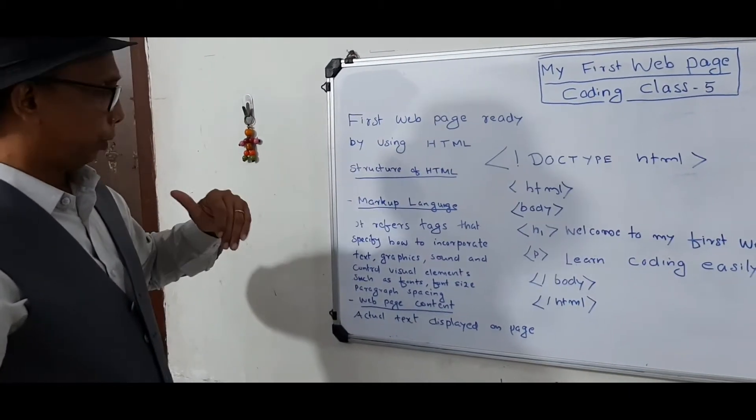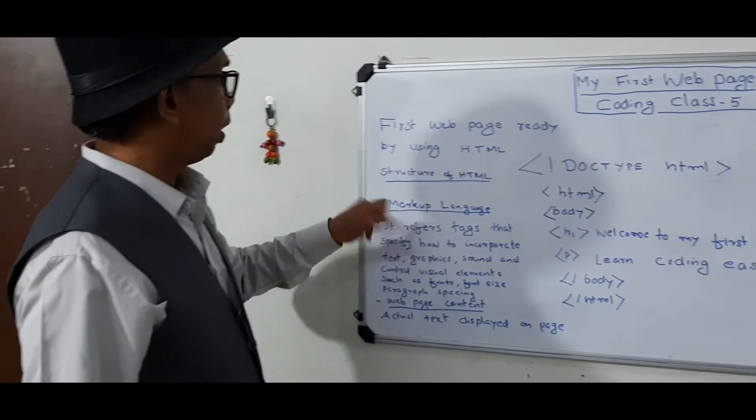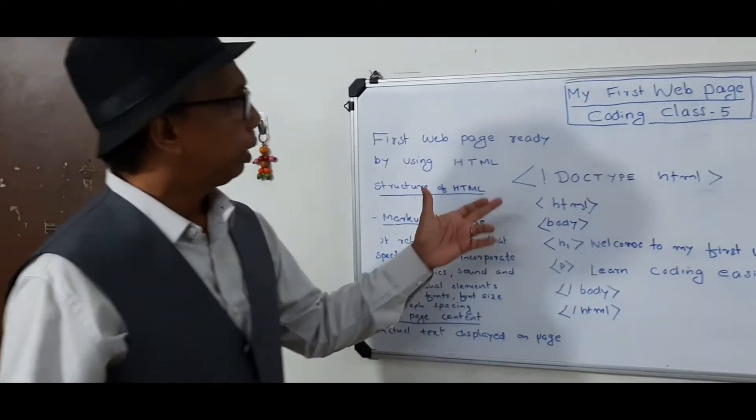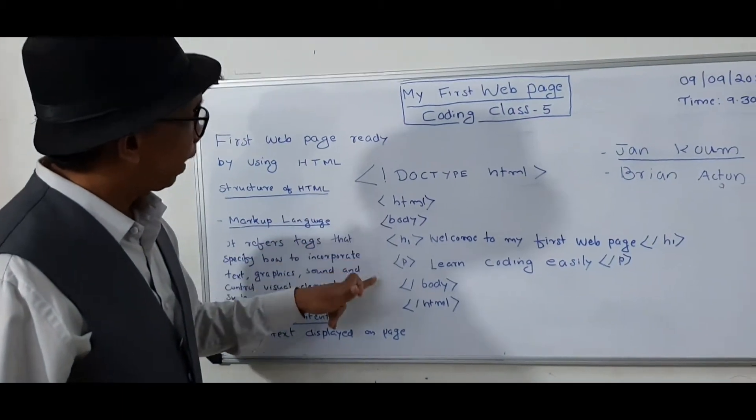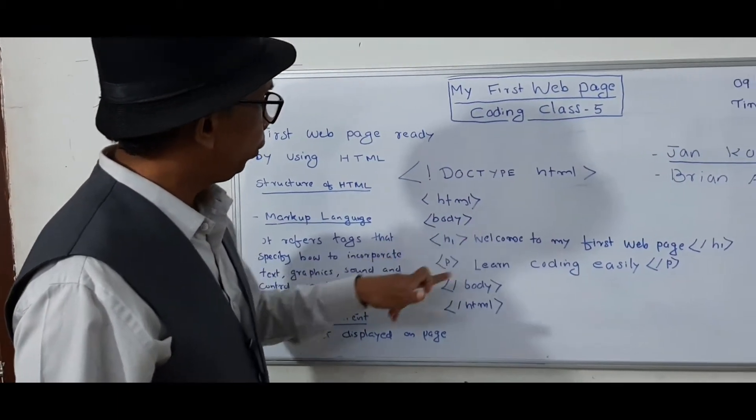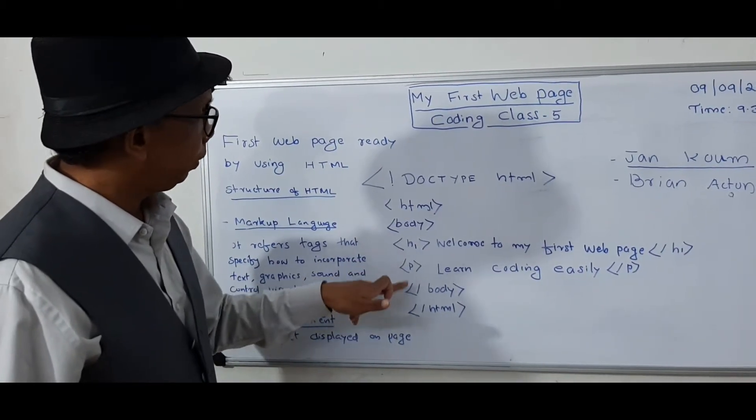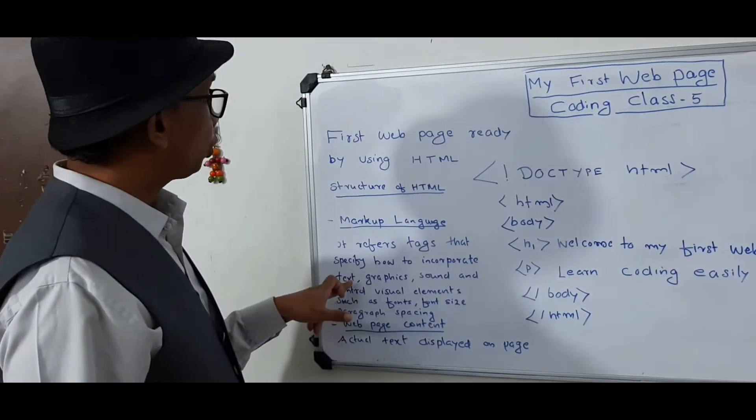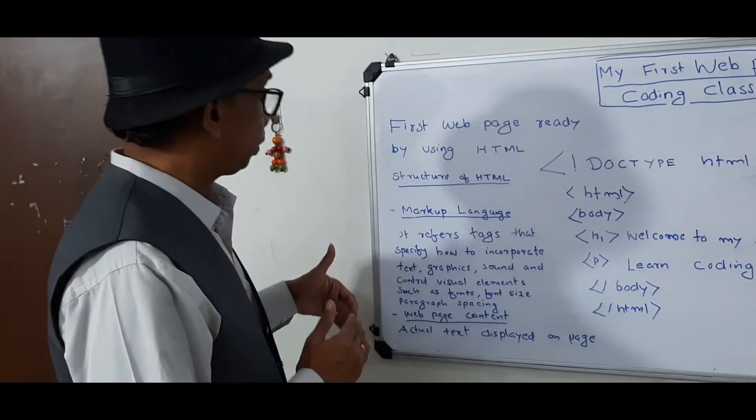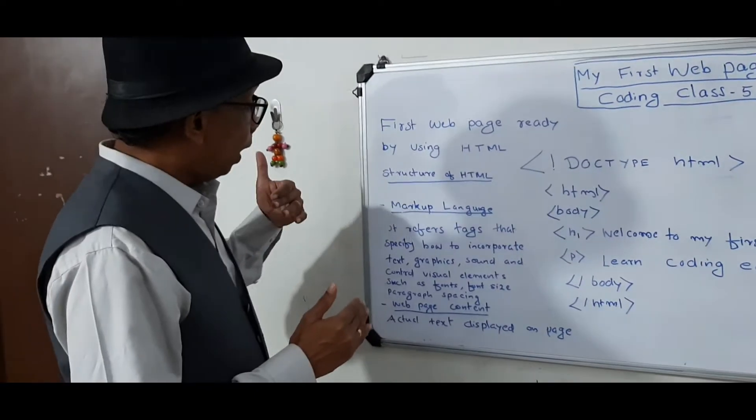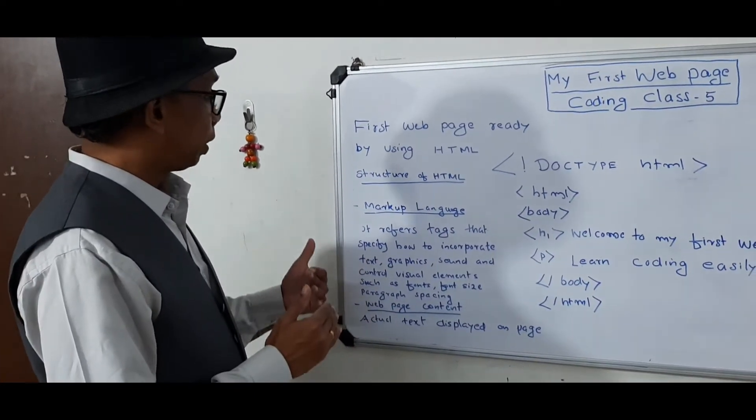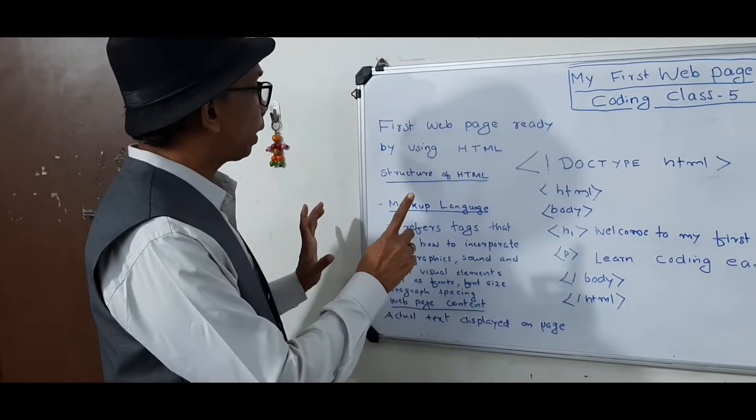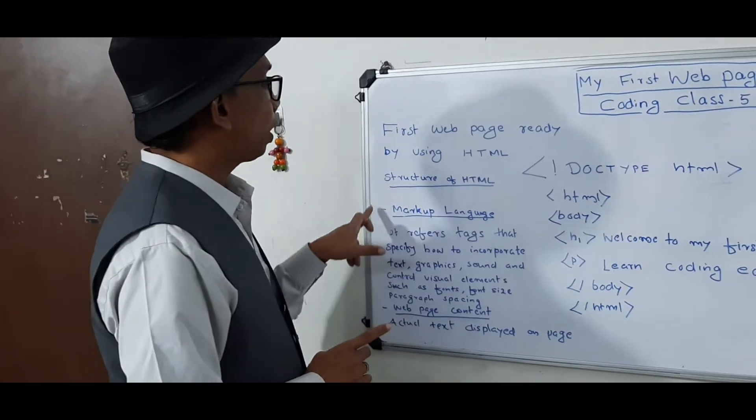The HTML has two sections. One is markup language. Markup language means it refers to tags. You can see HTML. There are lots of tags. Look, HTML, body, H1, P, these kinds of tags. So these are the tags that specify how to incorporate text, graphics, sound and control visual elements such as font, font size, text, paragraph spacing, everything. These all actions can be conducted with the help of markup languages.